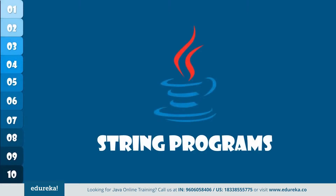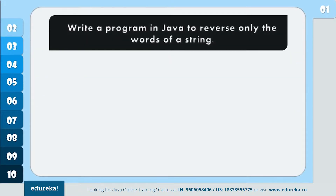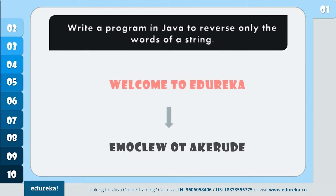Let's begin with some important programs on strings. The first program's problem statement goes like this: write a program in Java to reverse only the words of a string. Suppose you have a statement like 'welcome to Edureka' — in this you just have to reverse the words, but the sentence should remain the same. Let's see how to do this.